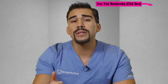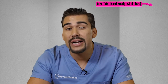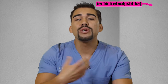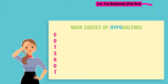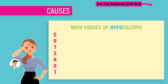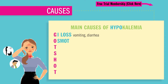The simplest way to remember low potassium causes is using our acronym GOTSHOT. G is for GI losses like vomiting and diarrhea. O is for osmotic diuresis — basically frequent urination, like with our diabetic patients with high blood sugar. They have to pee out all that sugar and we lose a little potassium too.